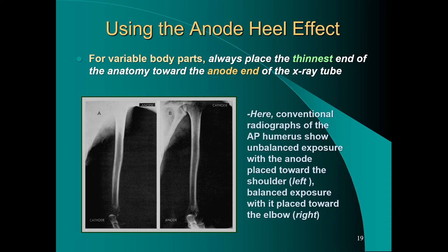The anode heel effect isn't just detrimental — it's something we can use to great effect. Many anatomic structures on the body are wedge-shaped, being thicker at one end and thinner at the other. Take the femur, for example: thicker at the hip end in soft tissue anatomy and thinner at the distal femur. Conventional radiographs of the AP humerus show an unbalanced exposure with the anode placed toward the shoulder.